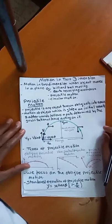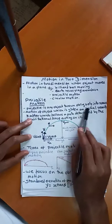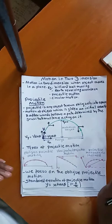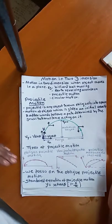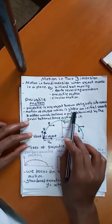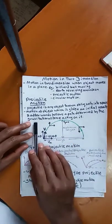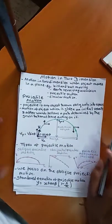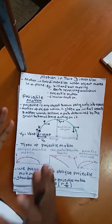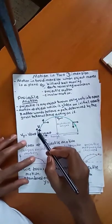In this case, projectile motion is an object that moves obliquely — any object placed in space at an angle follows a path determined by the gravitational force acting on Earth.